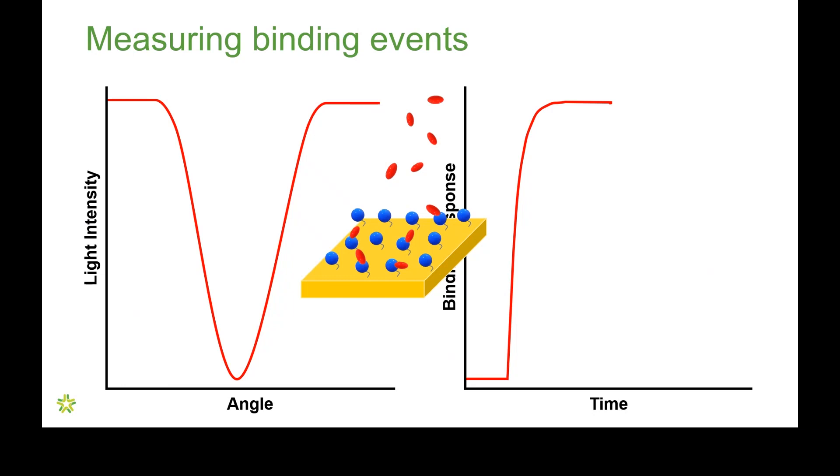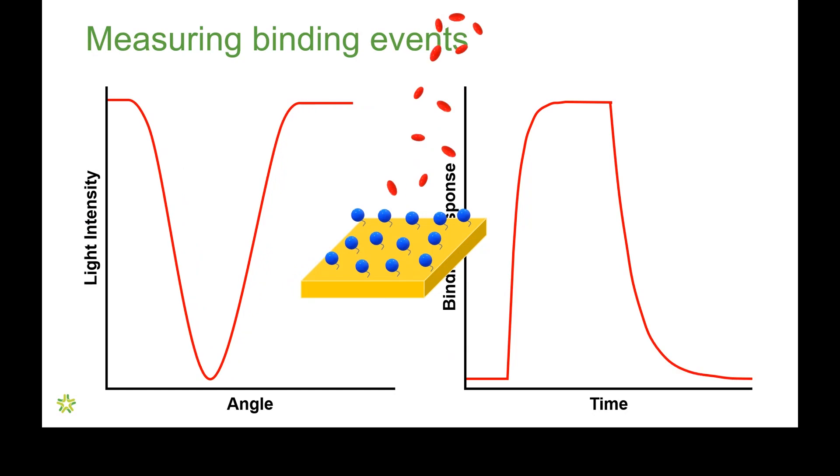Then, as buffer flows across the surface, analyte begins to dissociate, the binding response begins to decrease, and the dip minimum angle begins to shift to the left. As analyte continues to dissociate, the binding response returns back to baseline, and the dip minimum returns back to its starting angle.